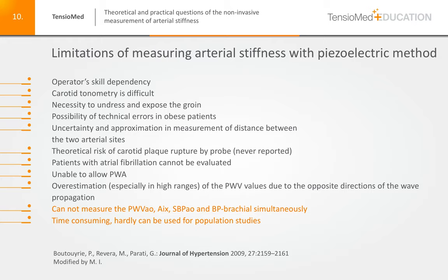Additional limitations include that this method is not able to simultaneously measure the aortic pulse wave velocity, the aortic augmentation index, aortic systolic blood pressure, and brachial blood pressure. Furthermore, the method is really time-consuming, and for this reason it can hardly be used for population studies, which require a fast and easy-to-use method.